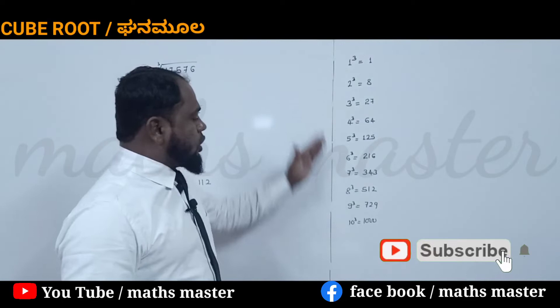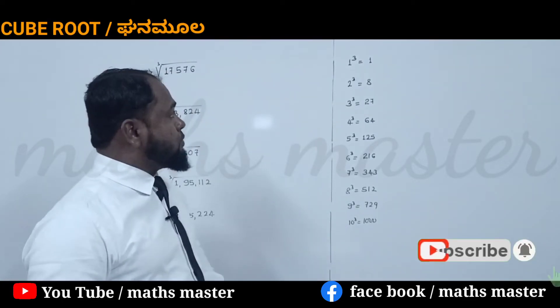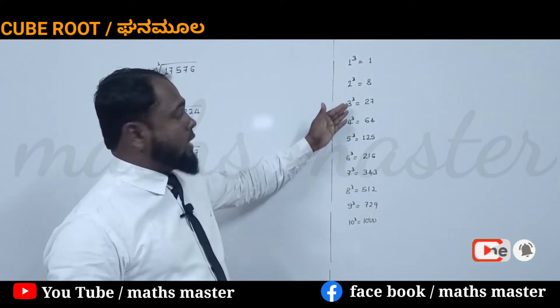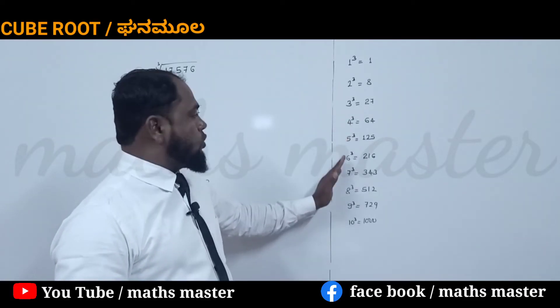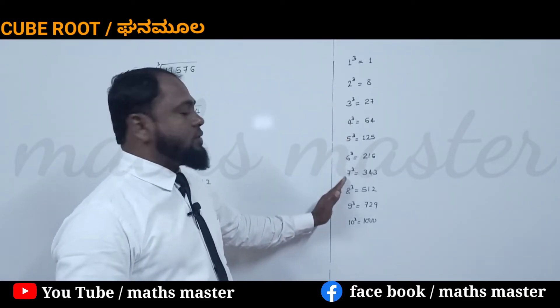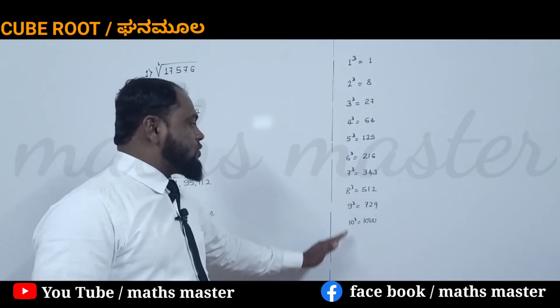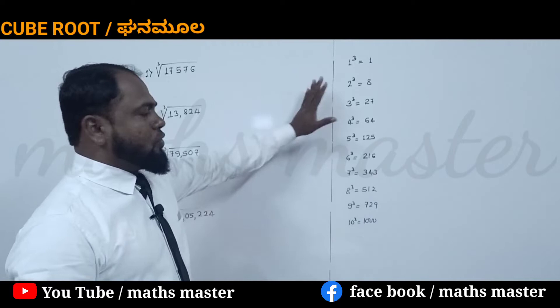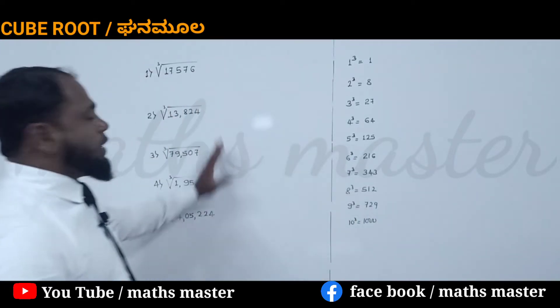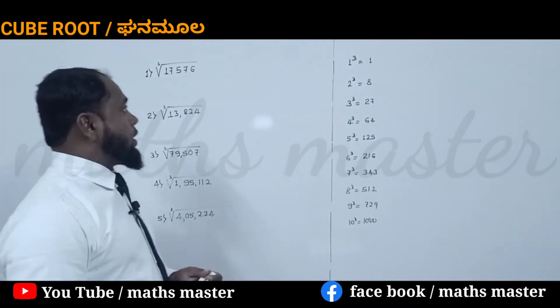Now, you must know the cubes of 1 to 10. The cube of 1 is 1, 2 is 8, 3 is 27, 4 is 64, 5 is 125, 6 is 216, 7 is 343, 8 is 512, 9 is 729, and 10 is 1000. If you know these, you can calculate the cube root of any cube number.